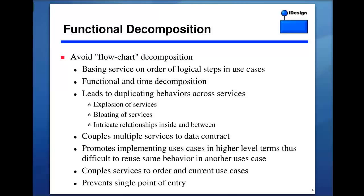The absolute classic mistake in decomposing a system is doing a flowchart decomposition. Decomposition means we don't want one big thing and we don't want lots of little things — we want some combination of modules. Functional decomposition means you look at the required functionality and decompose based on that. If you need to do sales and trading, you have a sales service and a trading service. That is literally the kiss of death of architecture — the project has failed before anybody wrote the first line of code.